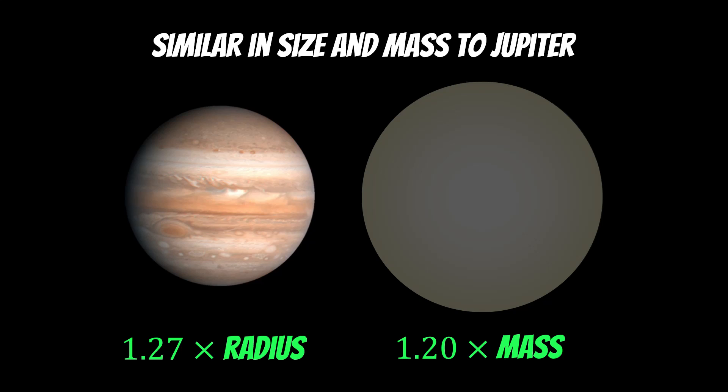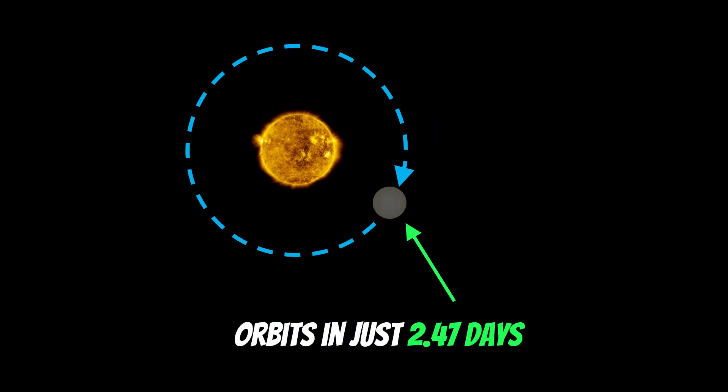But there are greater differences when we look at other things. For example, it orbits its star in just under 2.5 days. That is a very short orbital period which means it's very close to its star. For context, Jupiter orbits in over 4,000 days, so Jupiter is much further out. Because of that we would classify this as a hot Jupiter because it's very close to its star, about the size of Jupiter, but also very hot.